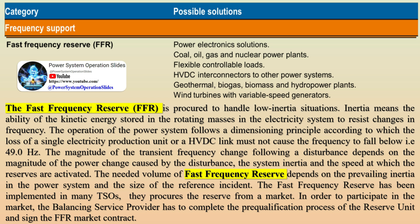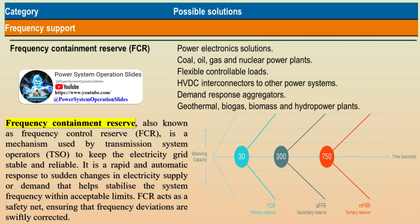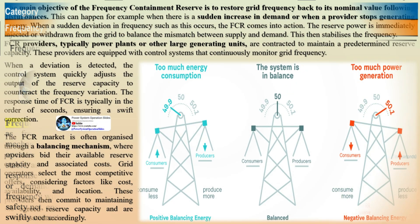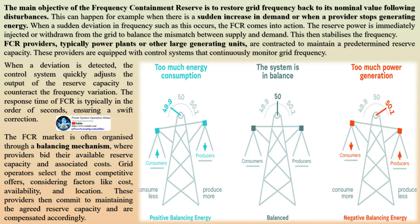Frequency containment reserve FCR, automatic frequency restoration reserve AFRR, manual frequency restoration reserve MFRR, and restoration reserves RR are specific categories of reserve power that play a vital role in maintaining grid stability, especially in response to sudden changes in frequency. In order to maintain the frequency within specific limits, transmission system operators TSOs implement balancing services which they obtain from providers known as balancing service providers BSPs. BSPs are now obligated to ensure they deliver the reserve service within a five-minute time frame referred to as full activation time.